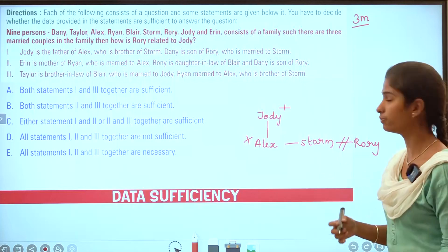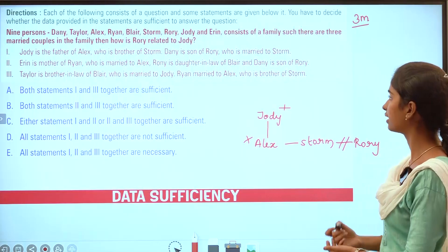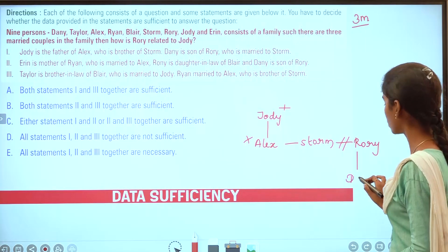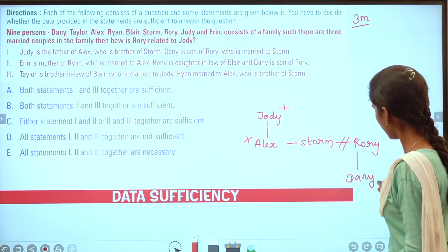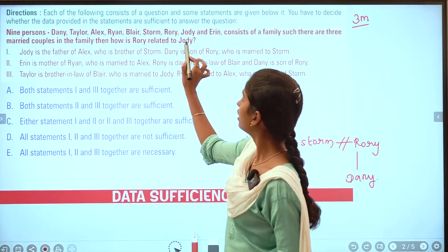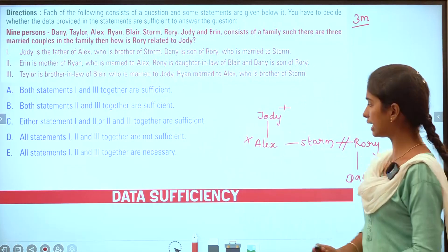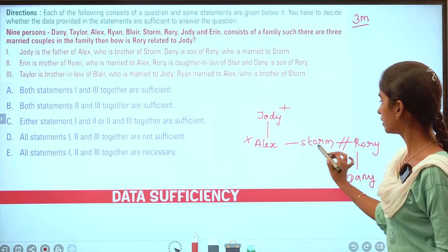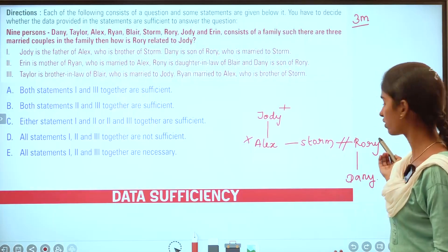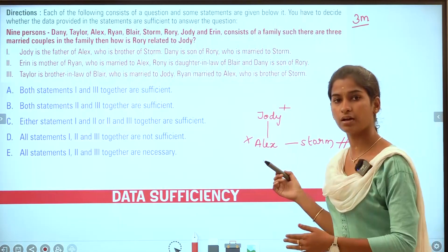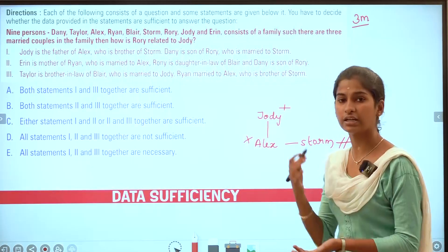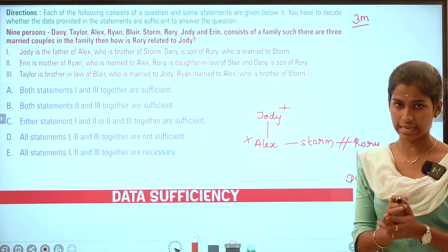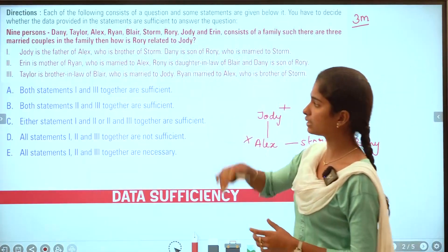But we don't know the gender — who is male and female? They are the son of Rory and the son of Danny. We need to figure out how Rory relates to Jody — whether they are siblings, or parent-child relationships like father of father or son of daughter.